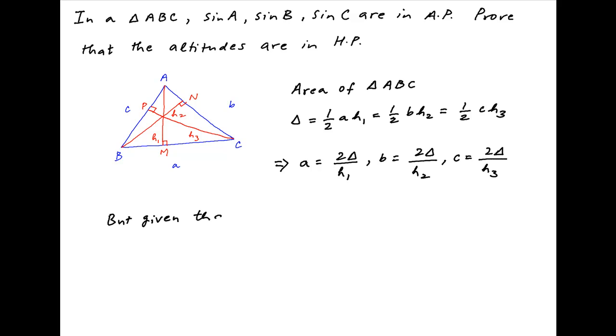Now we are given that sine A, sine B, and sine C are in arithmetic progression. Applying sine rule in triangle ABC, we have a upon sine A is equal to b upon sine B is equal to c upon sine C, and let's assume that all of these are equal to k.